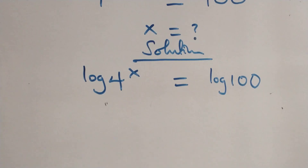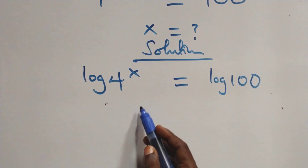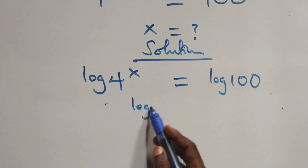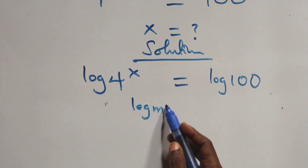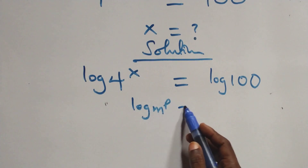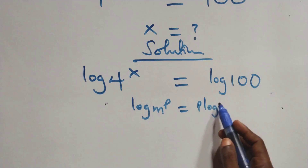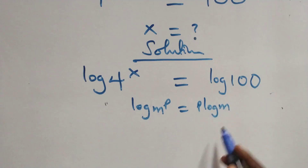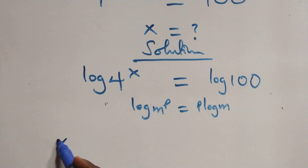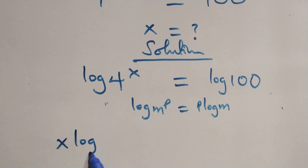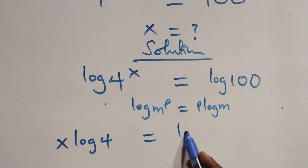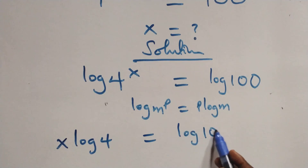And here we apply the power law of logarithm. When we have log m raised to power p, this is the same as p log m. So this becomes x log 4 equals log 100.